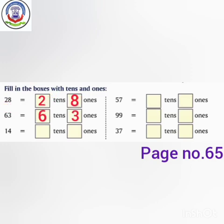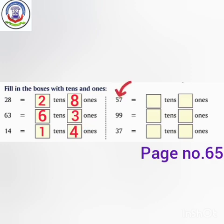Next is 14. We have to write 1s here and 10s here. How many 10s do we have? We have 1 ten. How many 1s do we have? We have 4 ones. So here we have 1 ten and 4 ones. Next is 57.